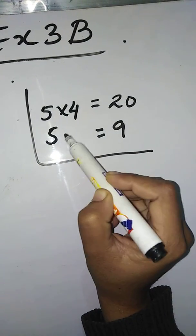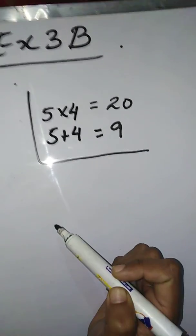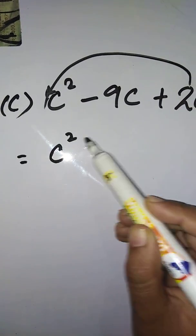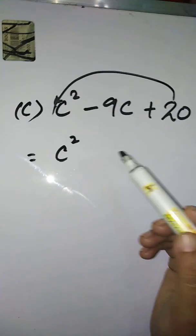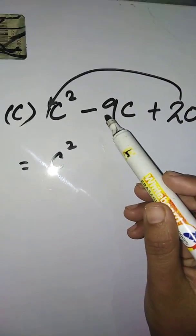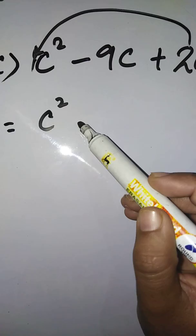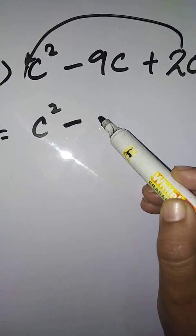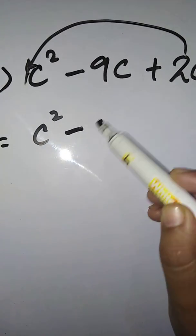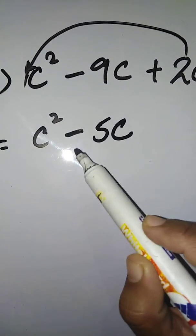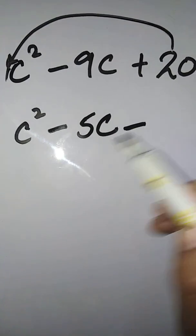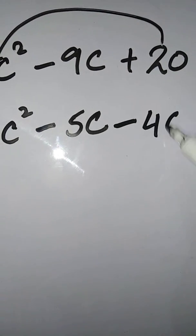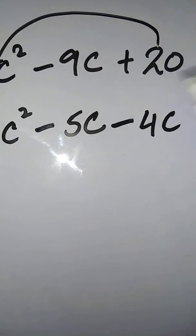Try 5 × 4 = 20 and 5 + 4 = 9. So the factors are 5 and 4. Write the first term c² as it is. The sign of the middle term is minus, so write -5c. For the second sign: minus minus is plus, but since we need to add to get 9, the second sign should also be minus, giving -4c. Write the last term +20.